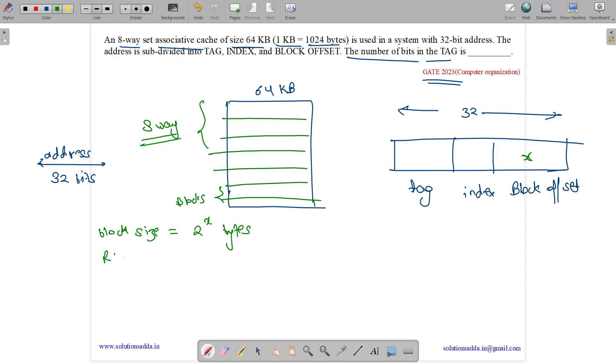What is the cache size? Cache size is 64 kilobytes, which is equal to 2 to the power 6 into 2 to the power 10, which is 2 to the power 16 bytes.